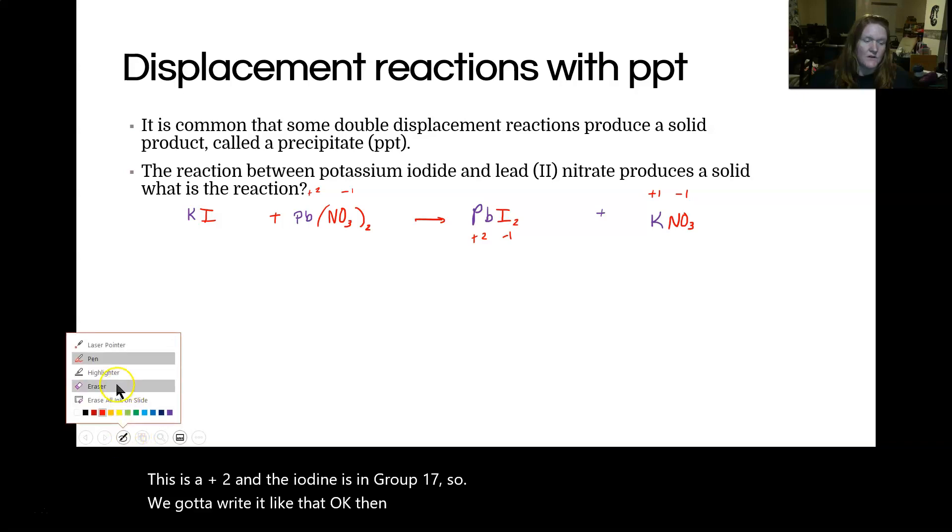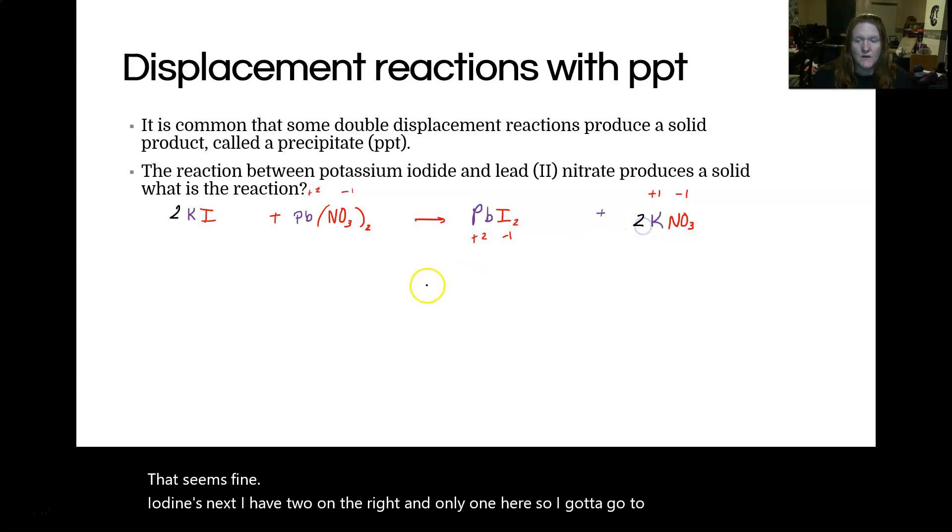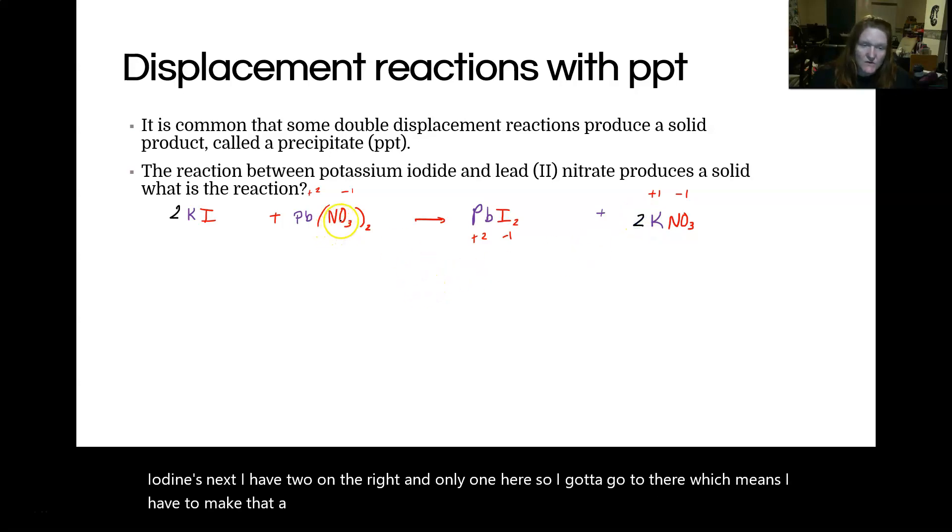Then I'll balance the reaction. So starting with the metals, we're going to do potassium. I have one on each side. That seems fine. Lead. I have one on each side. That seems fine. Iodine's next. I have two on the right and only one here. So I got to go two there, which means I have to make that a two, which actually helped us out because I needed two nitrates anyways. So there we go. That's our balanced reaction. Quick and easy.